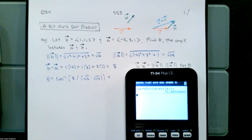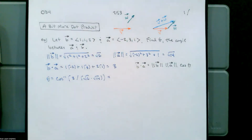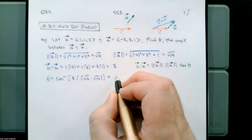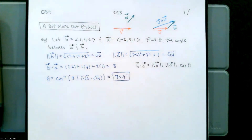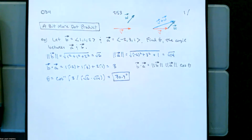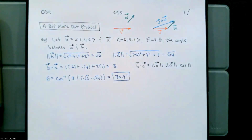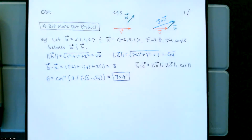That looks like 70.9 degrees. Let's draw a picture of vectors B and A and see what the dot product is going to tell us.